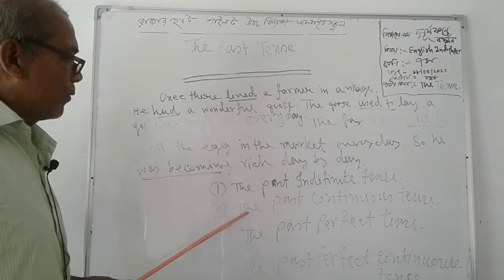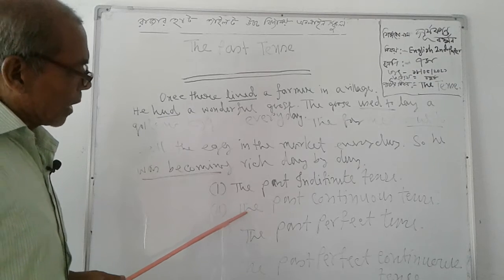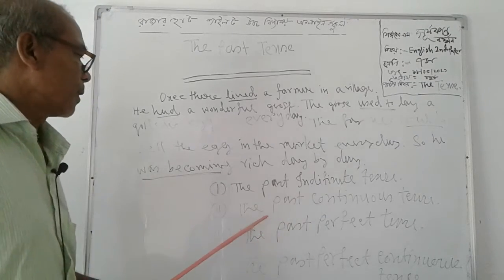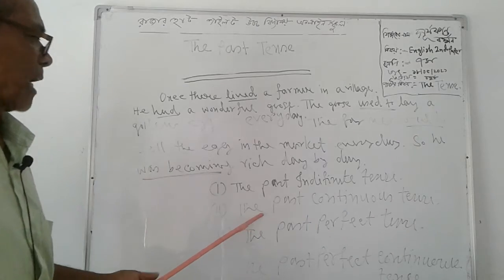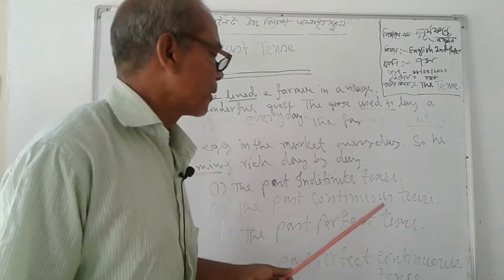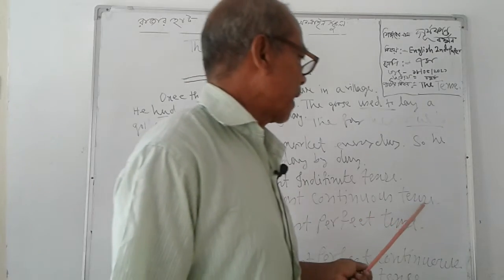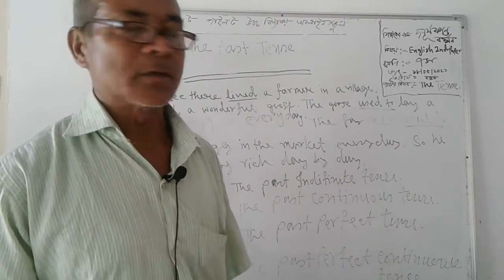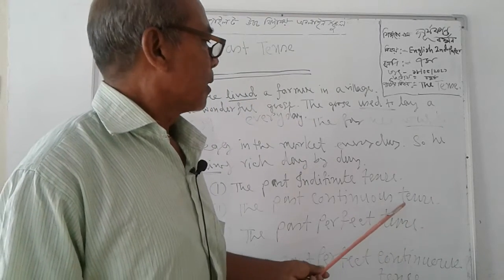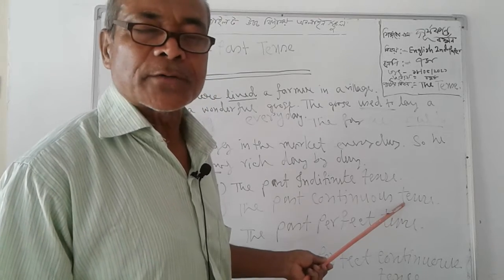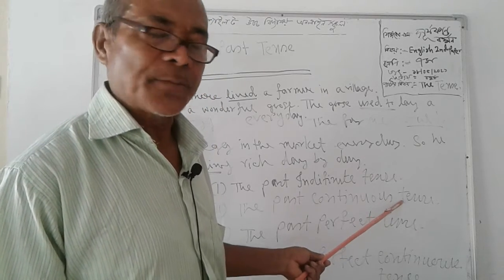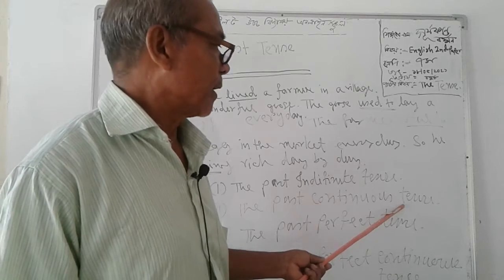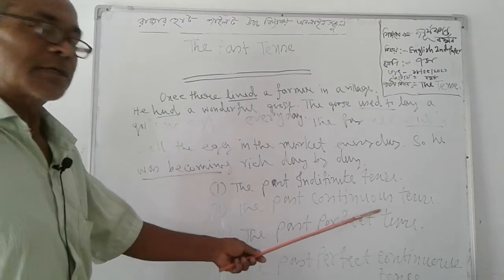Can you tell me what is called the past continuous tense? The past continuous tense denotes an action that was going on in the past time and for some time. That is called the past continuous tense.